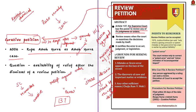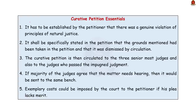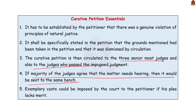The petitioner must assert specifically the grounds for the review petition, and can take only two limited grounds in a curative petition: one, that he or she was not given an opportunity to be heard; and another, that the judge was biased. Curative petitions are heard by the top three judges including the Chief Justice of India plus the judges who dismissed the review petition. An open court hearing is permitted if requested, but a curative petition is usually decided by judges in the chamber. If the petition lacks any reasonable grounds for consideration, the court may impose an exemplary cost on the petitioner.